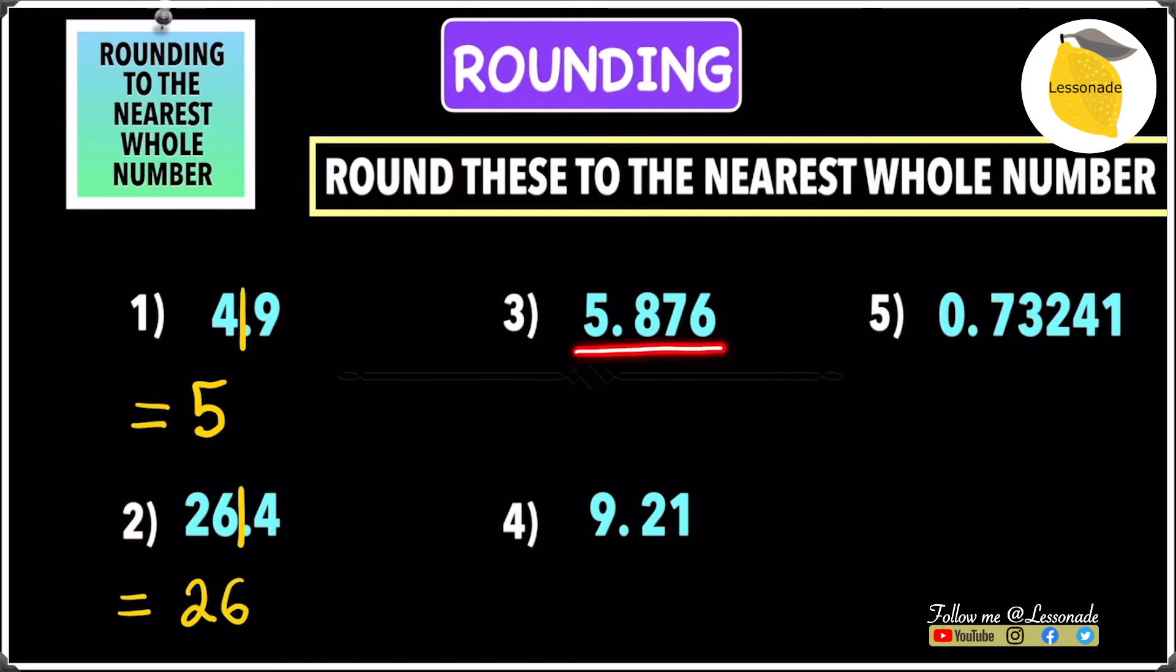Let's move to 5.876. The whole number is 5, so draw a line after the 5. If the digit after the line is 5 or above, add 1, so you get 6. The numbers remaining, replace them with zeros, but you don't have to since they're decimals. Your answer will be 6.